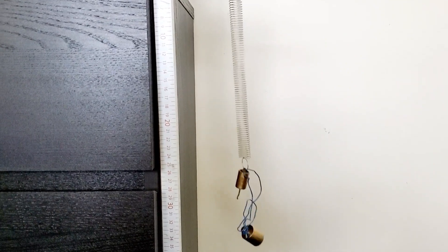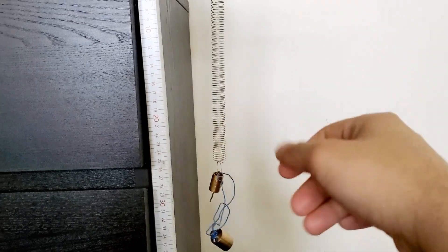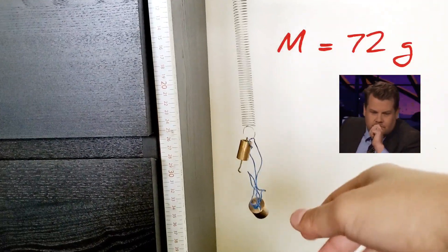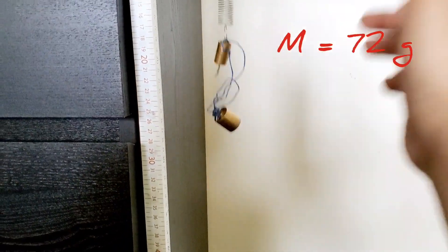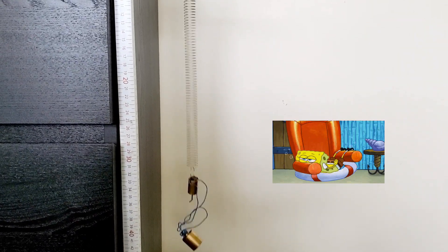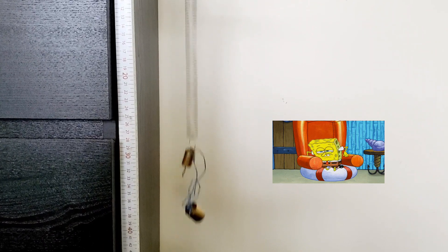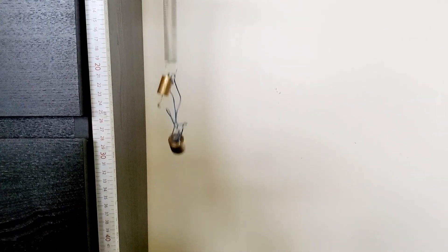Okay, so for the second mass that we're going to oscillate, it's going to be the 20 gram plus the 52 gram. So add them together, that'll tell you what the mass of the second trial is going to be, and I'm going to let it oscillate right now. Okay, and we'll move on to the third mass.